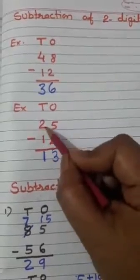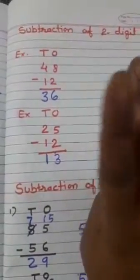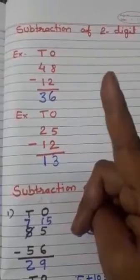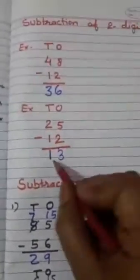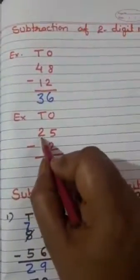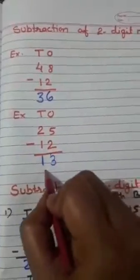Subtract 10s with 10s. Take out 2 fingers, subtract 1. How many fingers left? 1. So I write here 1. Means 25 minus 12 equal to 13.